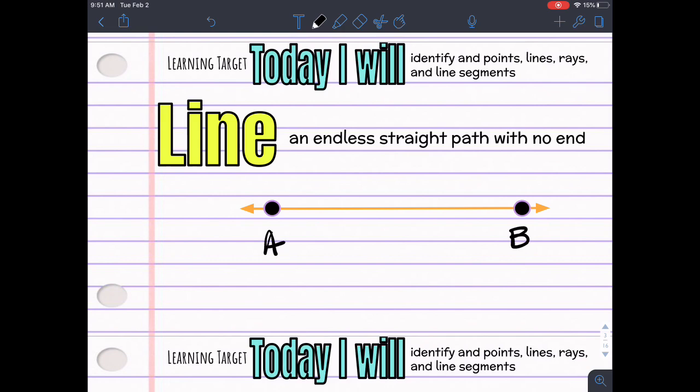They're telling you, okay, this is line A, B. So, if I were to write line A, B, then I would write the two letters I see, A, B, and then above it, I'm going to draw a line. Now, because it's a line, I have to draw both arrows, because that shows it does not stop. It's going on with no end in sight.